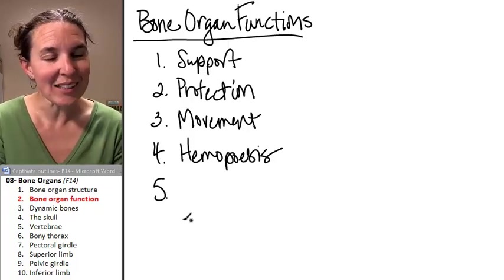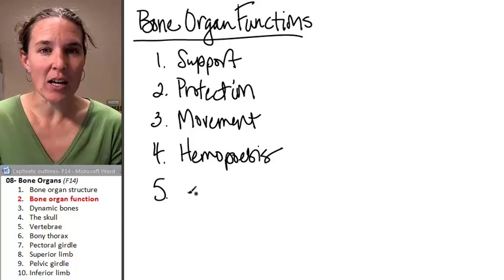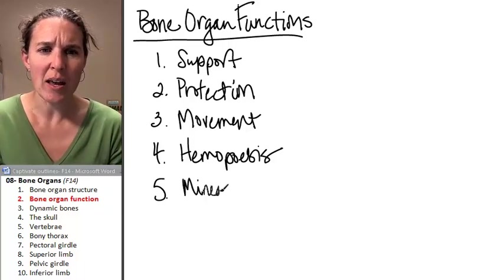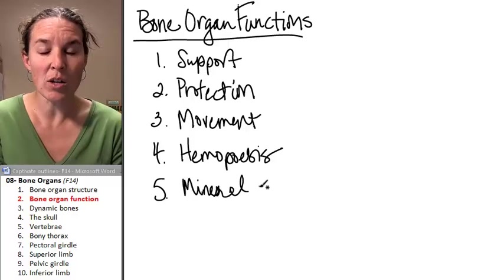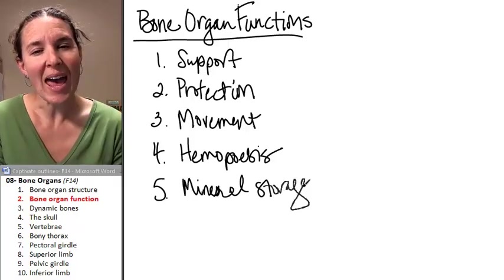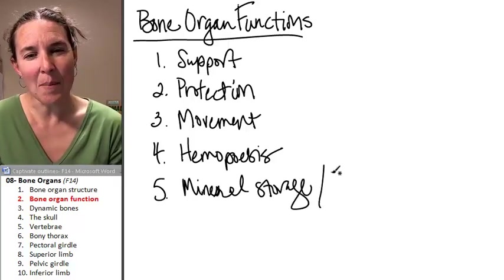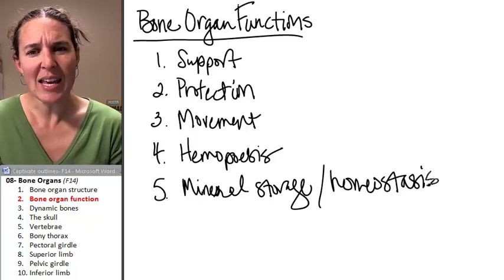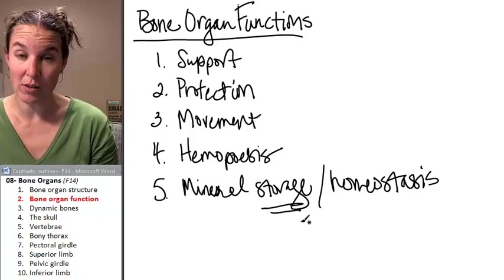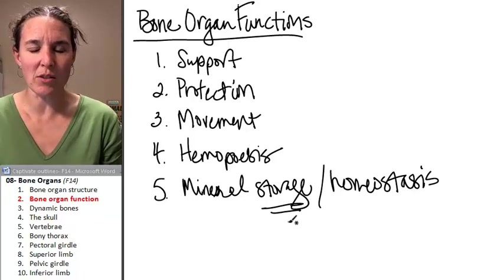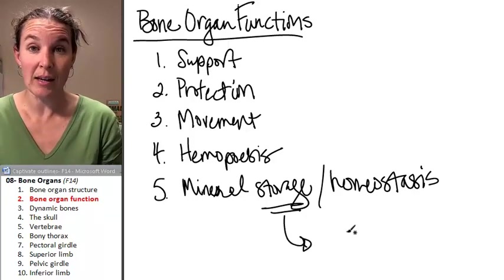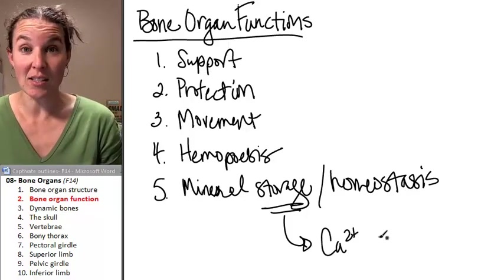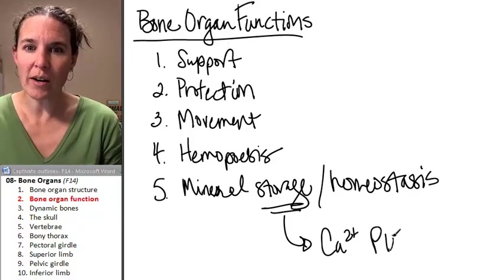And then the last one, an important function of bone organs is mineral storage and homeostasis. We're storing minerals. What minerals do you think we're storing in the bone organ? Probably the first one you think of is calcium. But we're also storing phosphate.